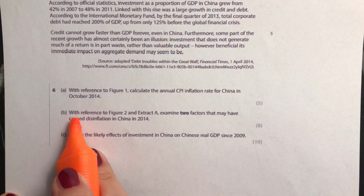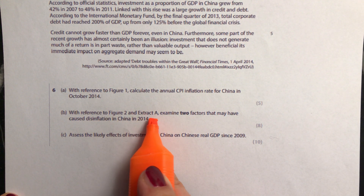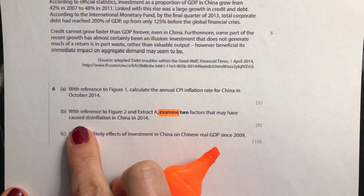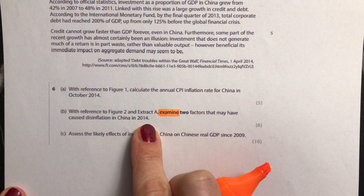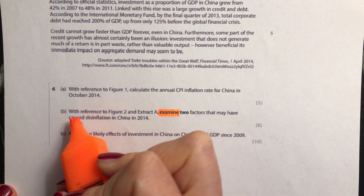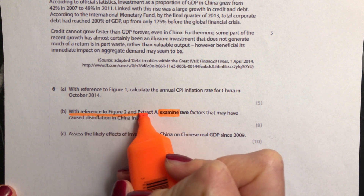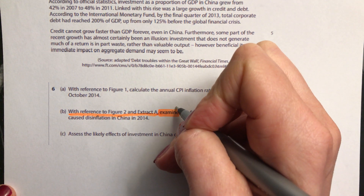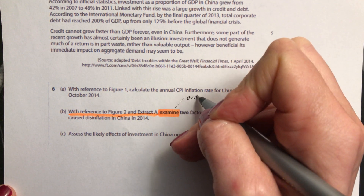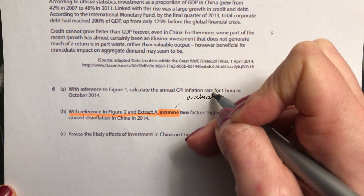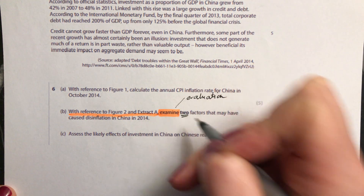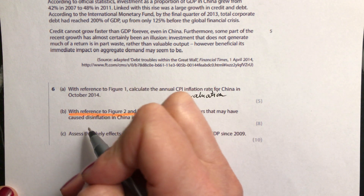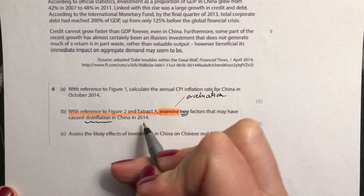We're going to look at this exam question with reference to figure 2 and extract A: examine two factors that may have caused disinflation in China in 2014. You've got to make sure you do exactly what it tells you to do — refer to figure 2 and extract A. The question word is examine, and remember, you need to have evaluation for that. It's two factors — make sure you talk about two, not one or three.